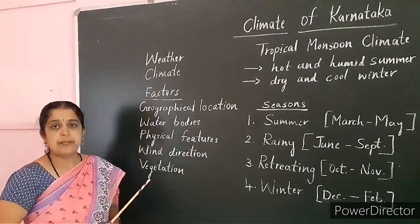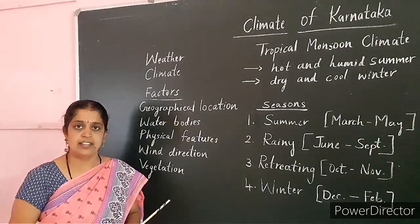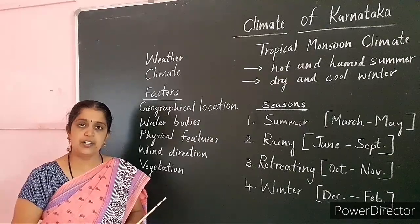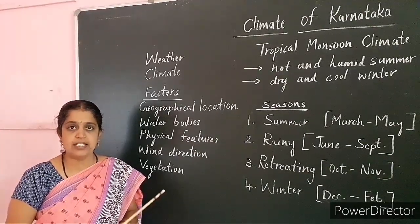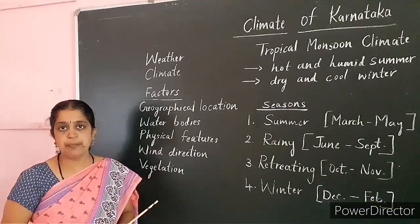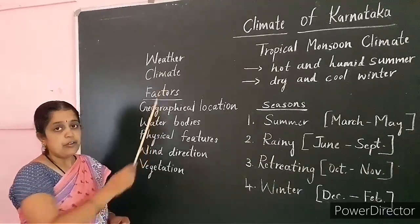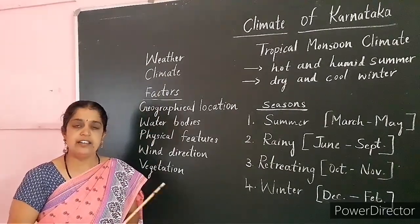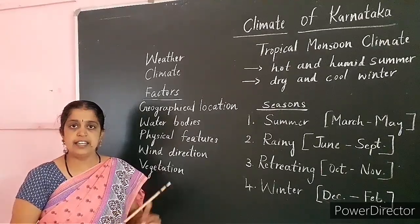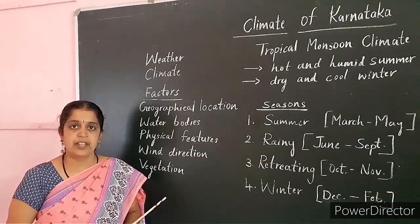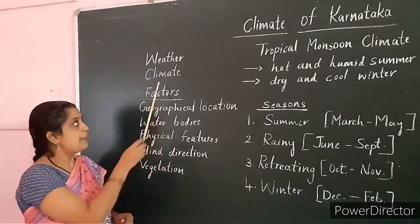Short-term determination of atmospheric changes is called weather. It may be a one-day, two-day, or one-week consideration. The study of atmospheric changes for a shorter period is called weather. Study of weather over a period of one year is called climate — it is the determination for a longer period.